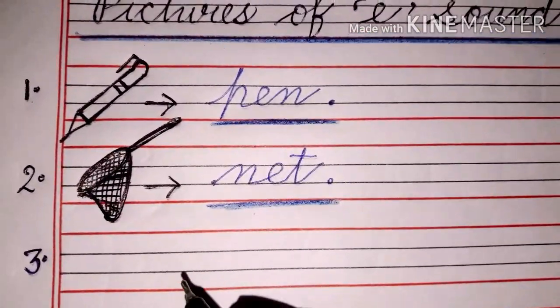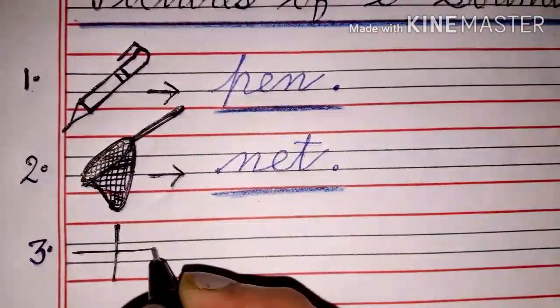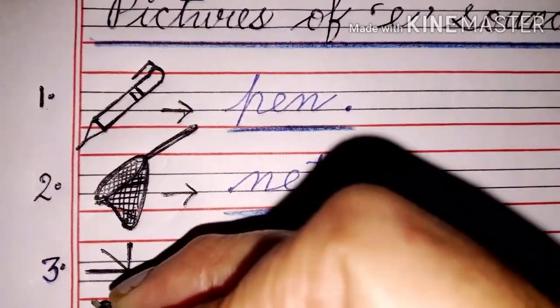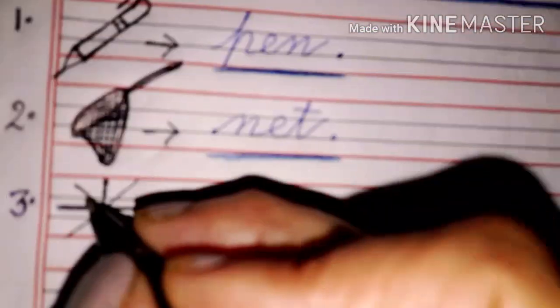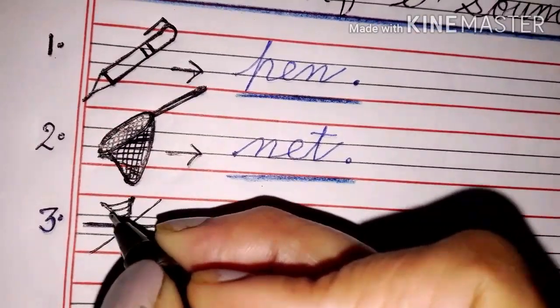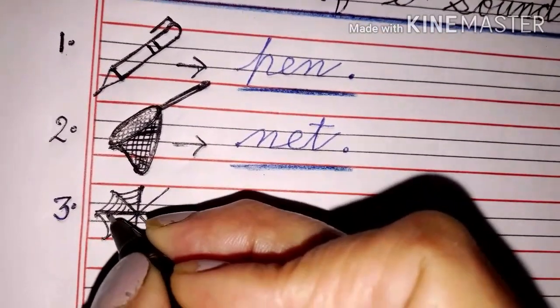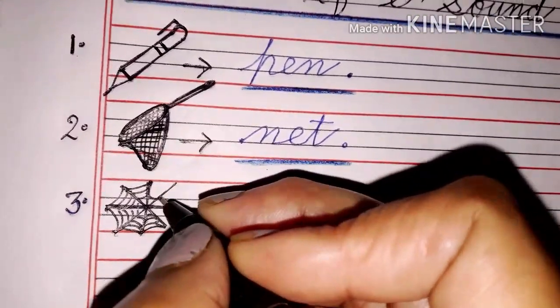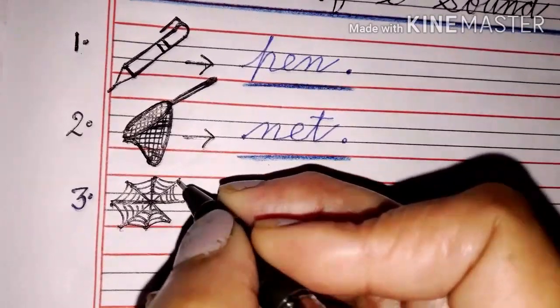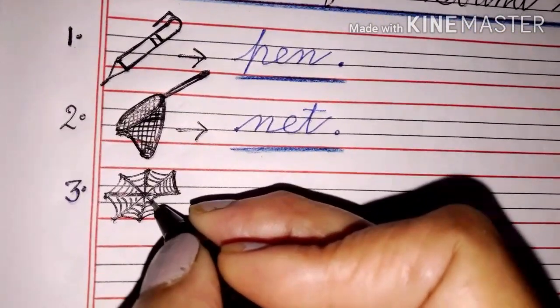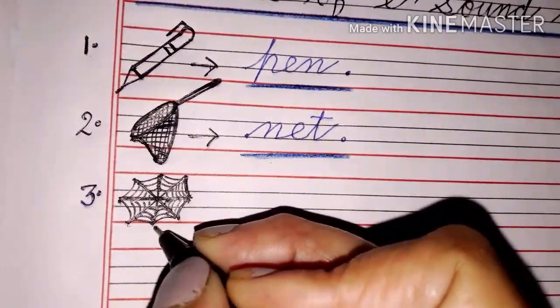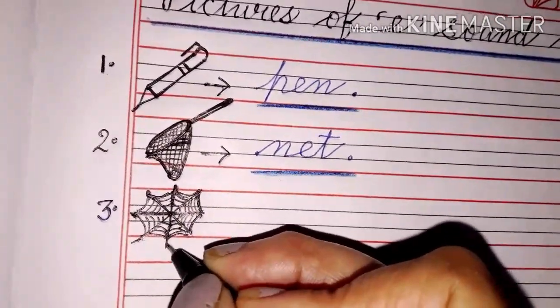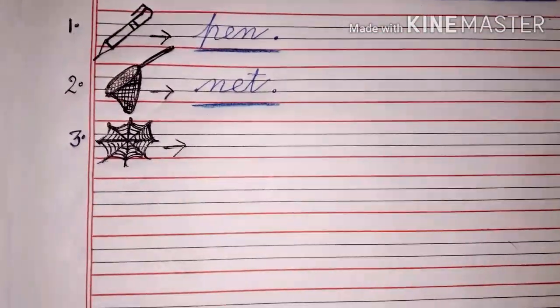Make a standing line. Then a sleeping line. In the centre of this. And two slanting lines will cross to each other. And we will make small small curves inside this line. You have to make small small curves inside these lines. Now tell me what is this? This is a web.